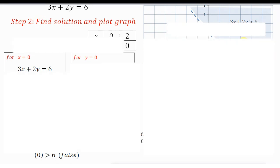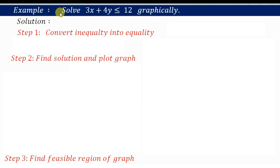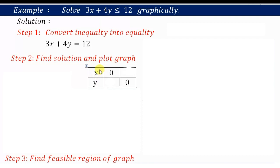Next example — Problem 3 from Exercise 6.2: solve 3x plus 4y less than or equal to 12 graphically. This is a slack inequality, so the graph will have a solid line, not a dotted line. Step 1: convert the inequality into equality — 3x plus 4y equals 12. Step 2: find the solution and plot the graph by finding values of x and y.